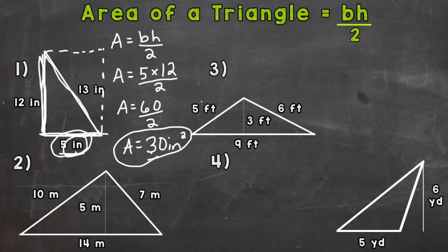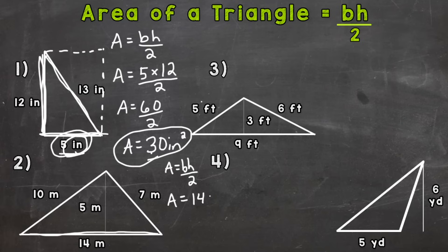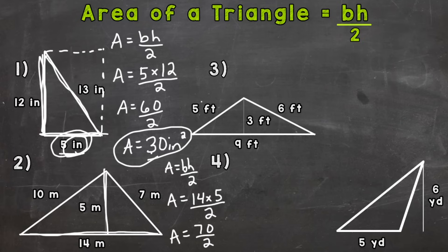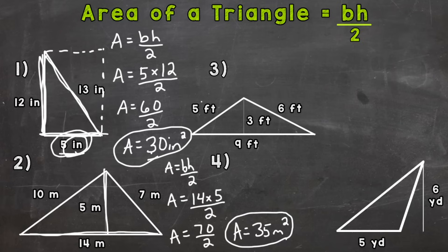So let's go to number 2. We start by writing out our formula: area equals base times height divided by 2. Now we plug in — the base is 14 meters times the height of 5 meters. We do not need the 10 or the 7. Then we divide by 2. So area equals 14 times 5 is 70, divided by 2. Area equals 35 meters squared. We use square units because there are 35 square meters — 1 by 1 meter squares — that cover that triangle or fill that area or space.